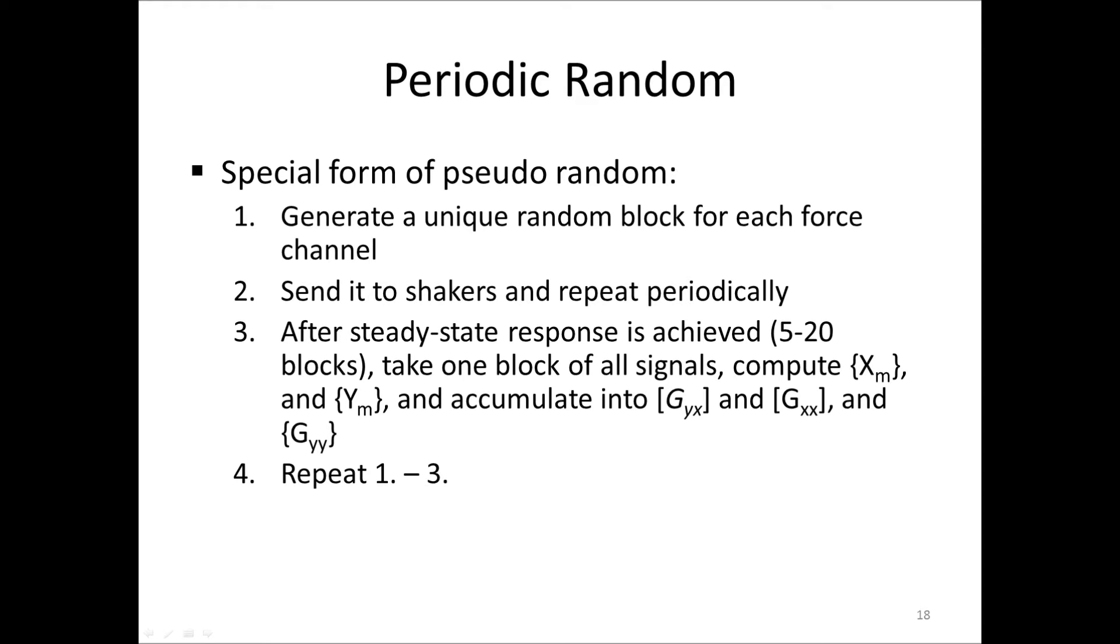Next, steps 1 to 3 are repeated a number of times. After enough averages, say 10 to 30, to get rid of the extraneous noise, the process is stopped. And the FRF matrix is computed by the estimator, for example the H1 estimator, using the accumulated spectra. And the multiple coherence is computed for each output.